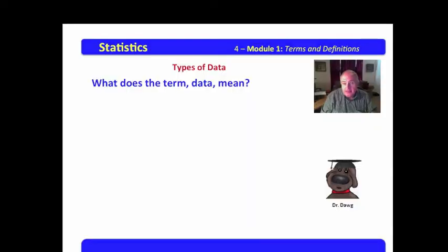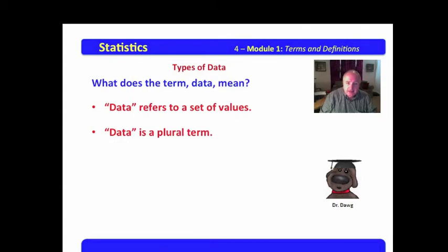What does the term data mean? Well, data refers to a set of values. I want you to pay careful attention here. The word data refers to a set of values. Notice that the set of values implies plural, values not a value. Data refers to a set of values. So the phrase data is a plural term. The singular of data is datum.